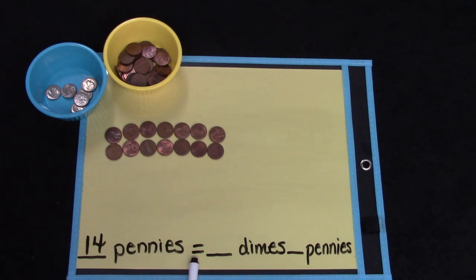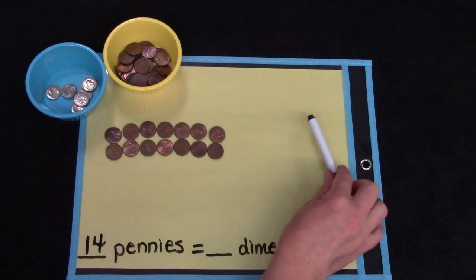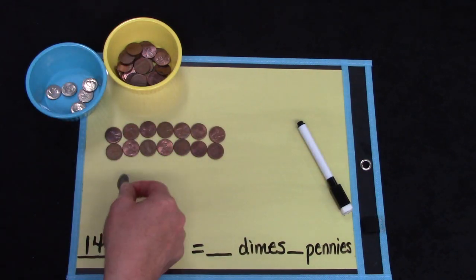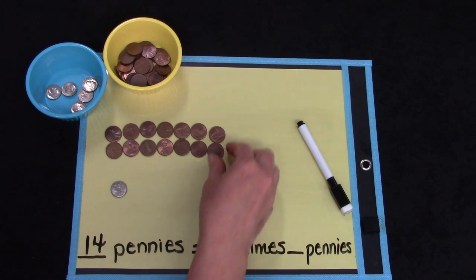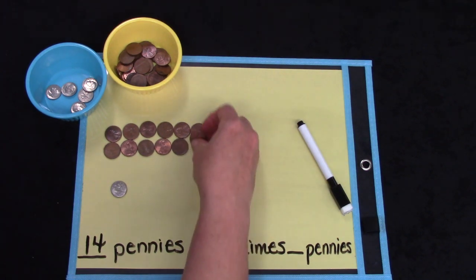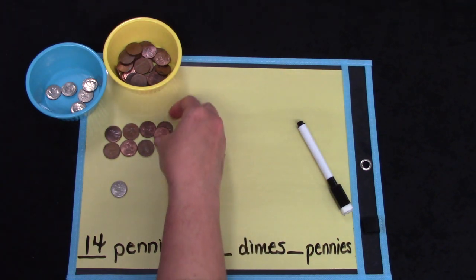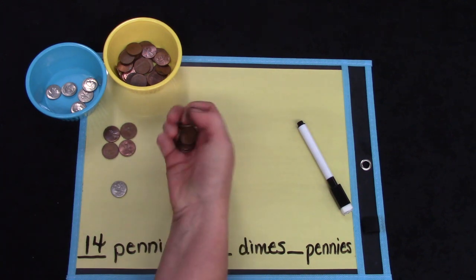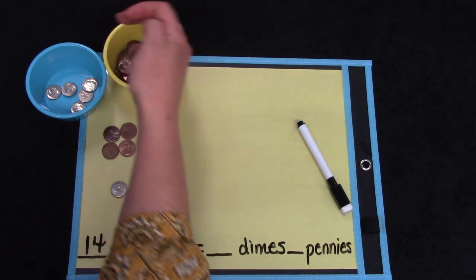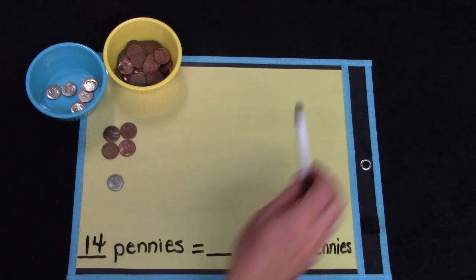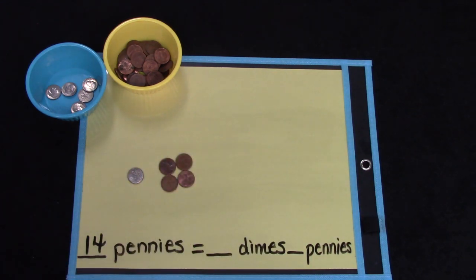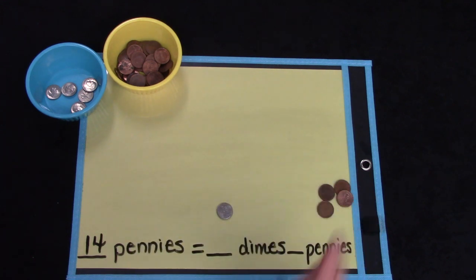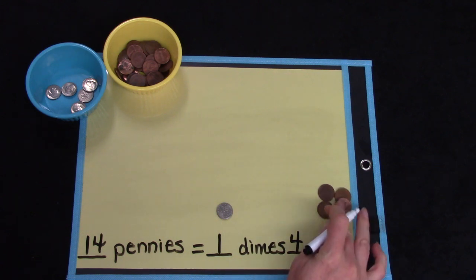Hmm, could I trade some of those pennies for a dime? I can. Did you remember that a dime is worth 10 pennies? 2, 4, 6, 8, 10. I'm going to trade 10 pennies for 1 dime. 14 pennies is the same as 1 dime and 4 pennies.